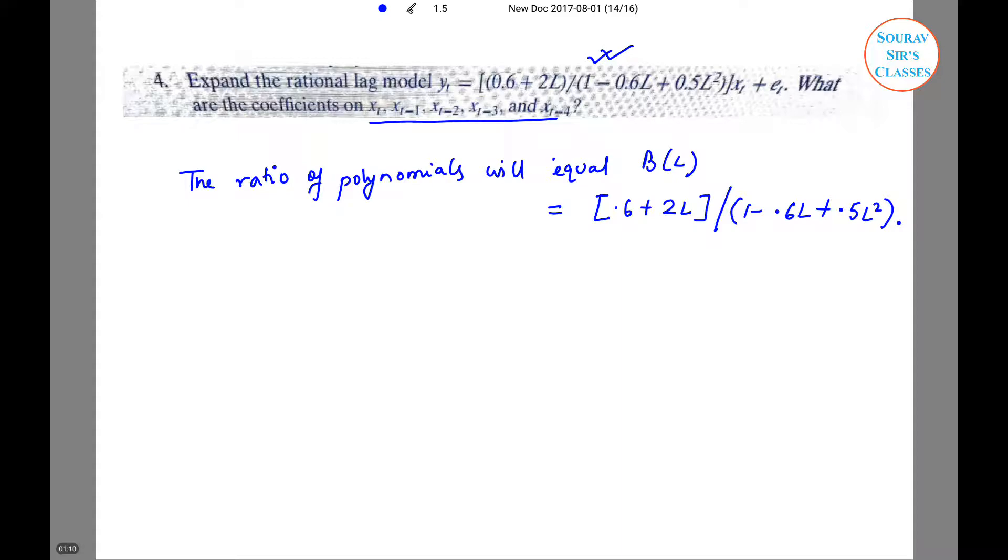This will expand to B naught plus beta 1 L beta 2 L square and it will go on.